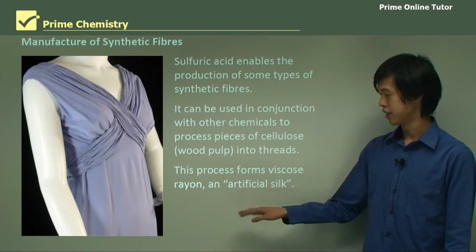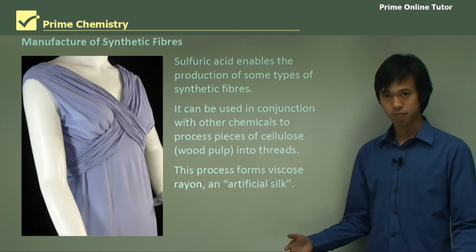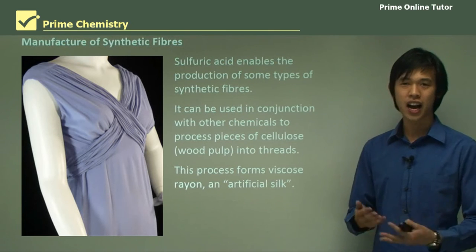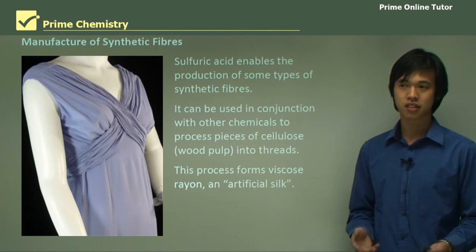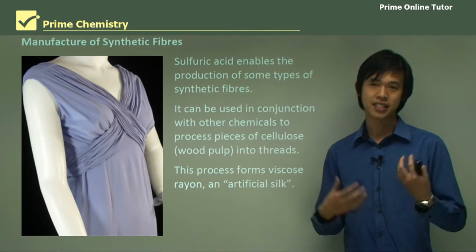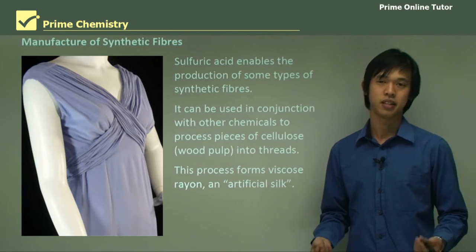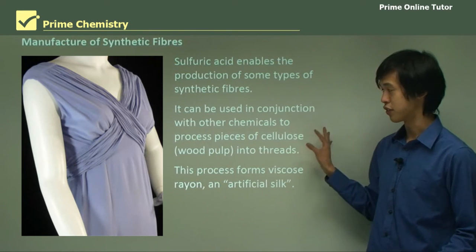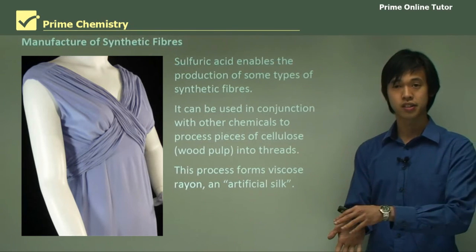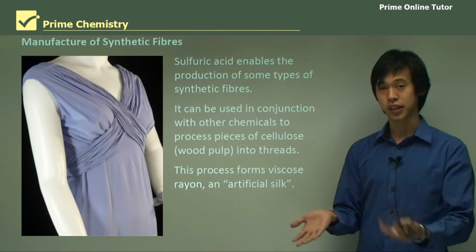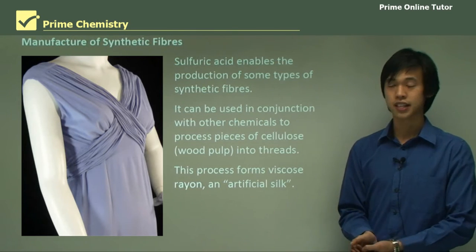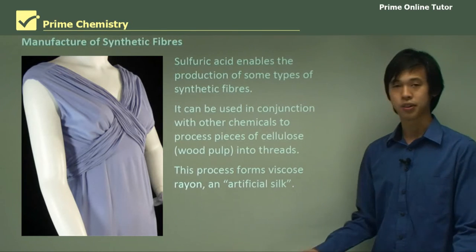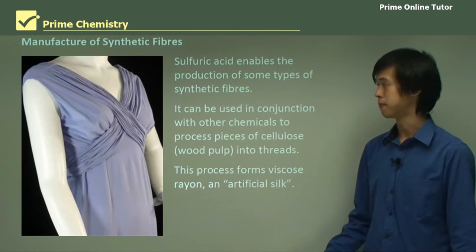Rayon is a sort of artificial silk — people like it because it's light and feels nice. The process of turning cellulose into something else with sulfuric acid produces rayon, and it's called artificial silk.